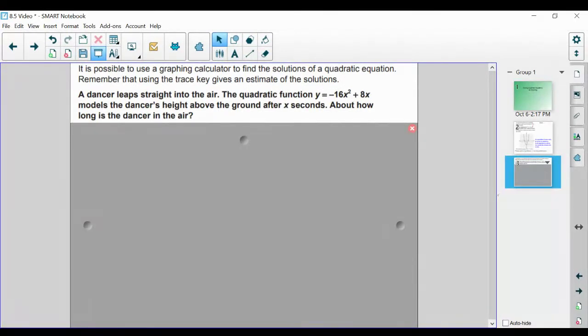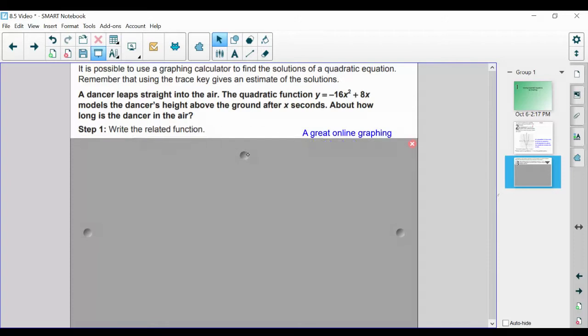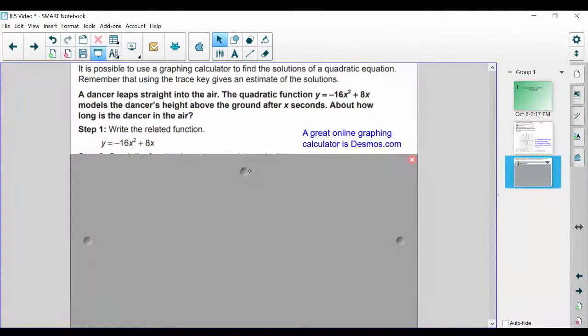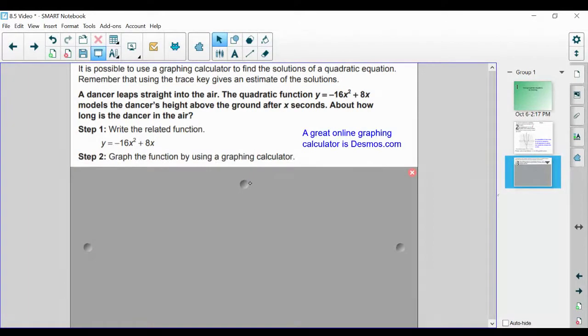A dancer leaps straight into the air. The quadratic function y = -16x² + 8x models the dancer's height above the ground after x seconds. About how long is the dancer in the air? We can write the related function y = -16x² + 8x and graph the function using a graphing calculator.